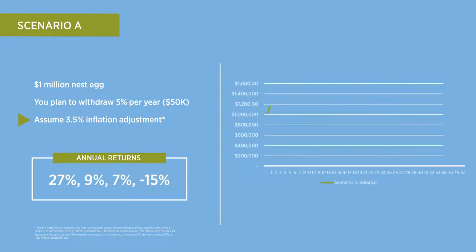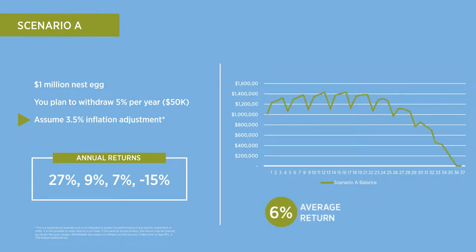As you can see, the ups and downs of the market produce a 6% average return and retirement income lasting 36 years.